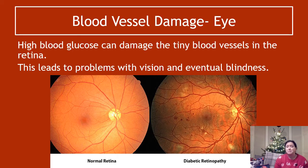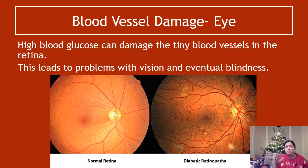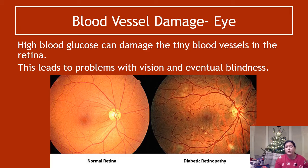The other thing that can happen is blood vessel damage. Let's focus on the eye — high blood glucose can damage the tiny blood vessels in the back of your retina, the bit that is sensitive to light, essentially the bit that you see with. I've got a normal retina and then somebody who's got diabetic retinopathy — you can see those darker areas indicating areas of damage. This leads to problems with vision and eventual blindness.